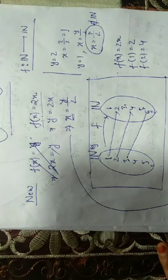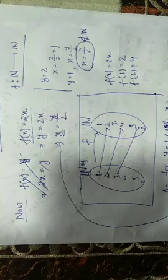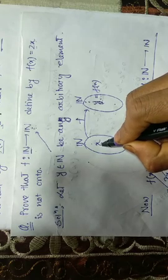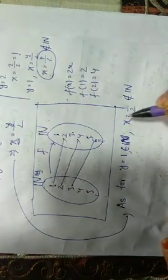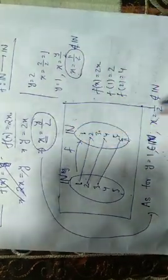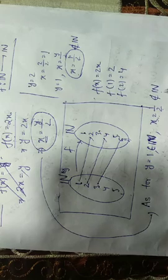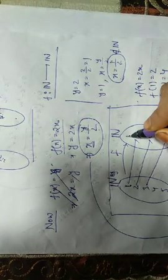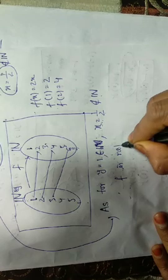Y is 1 is a natural number, but x equal to half does not belong to natural numbers. That means for at least one element, the corresponding element does not exist. Therefore, f is not onto.